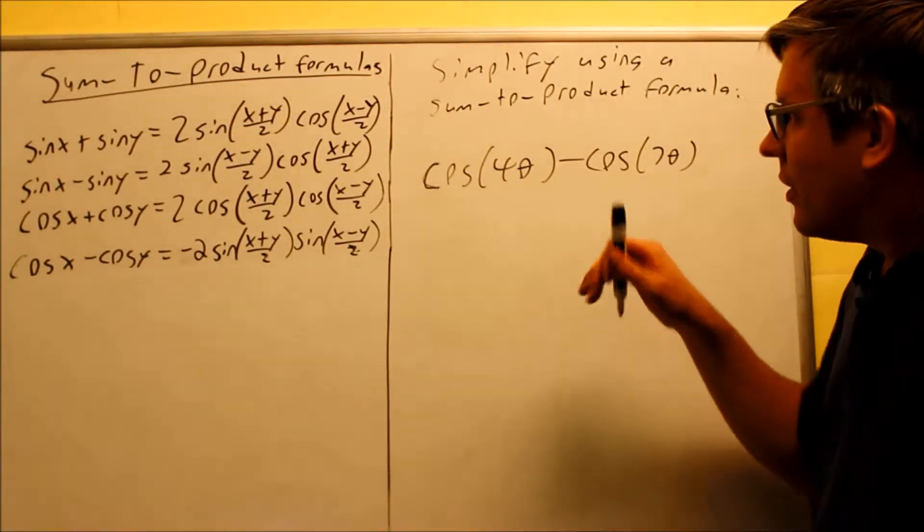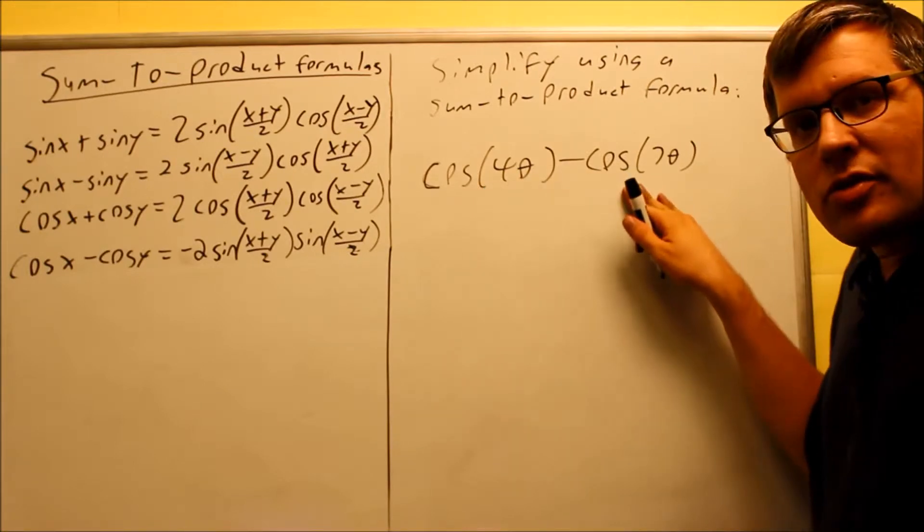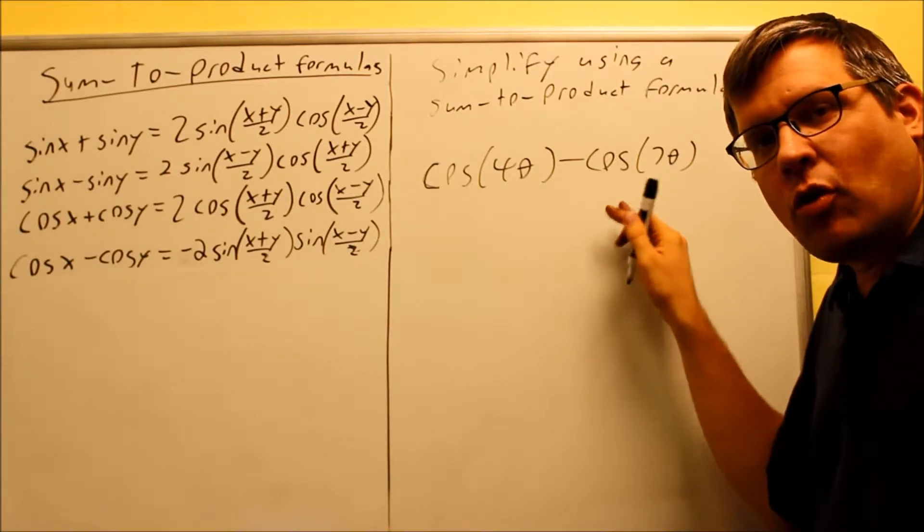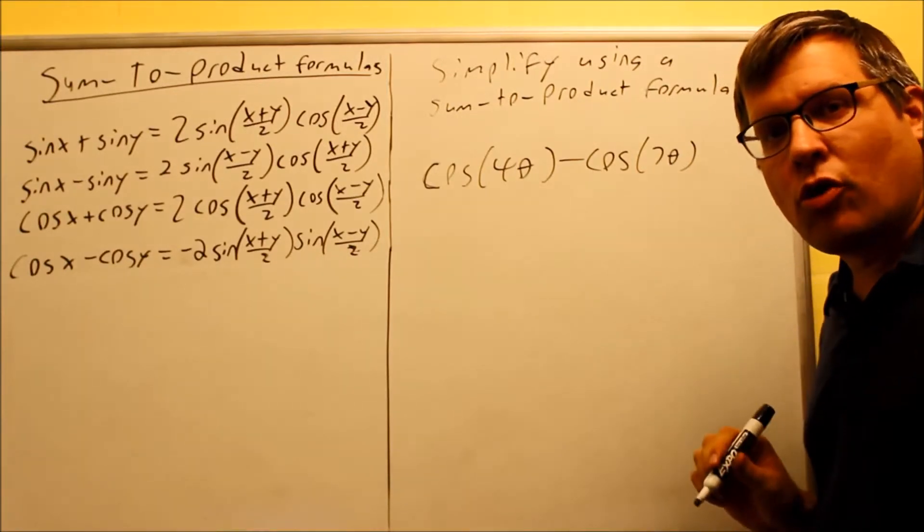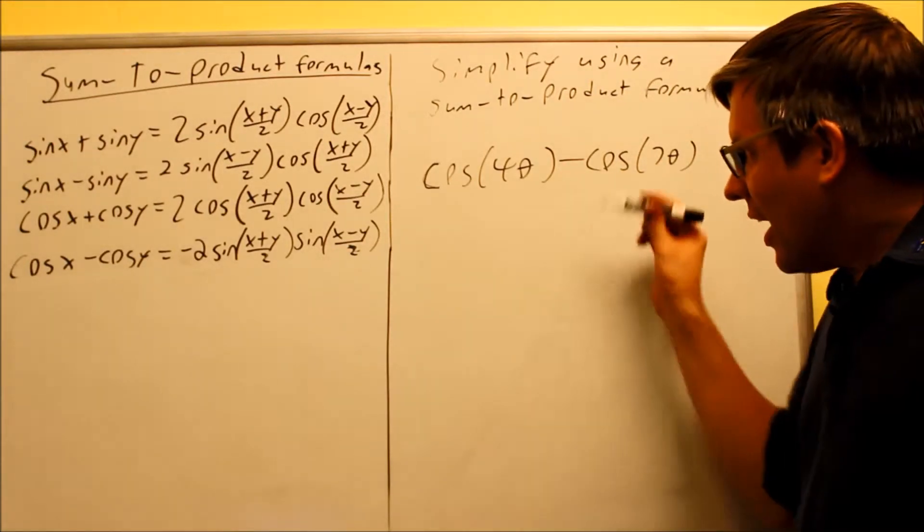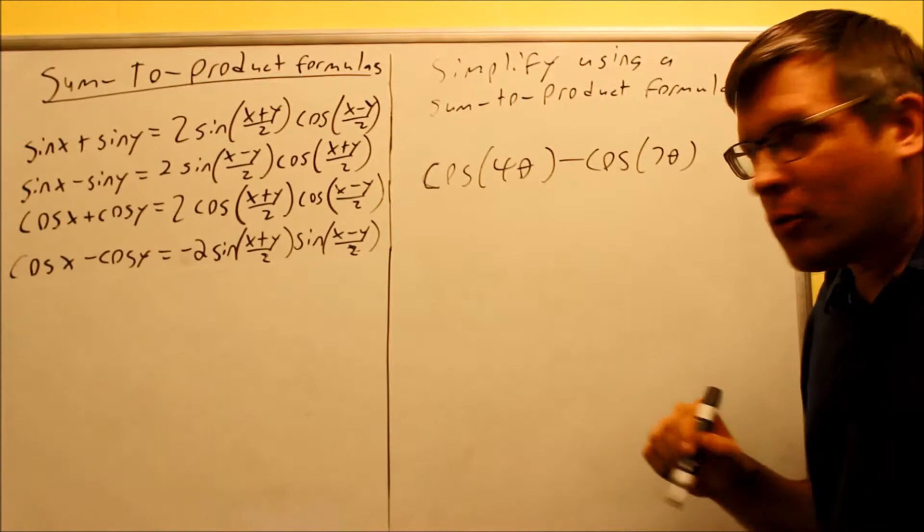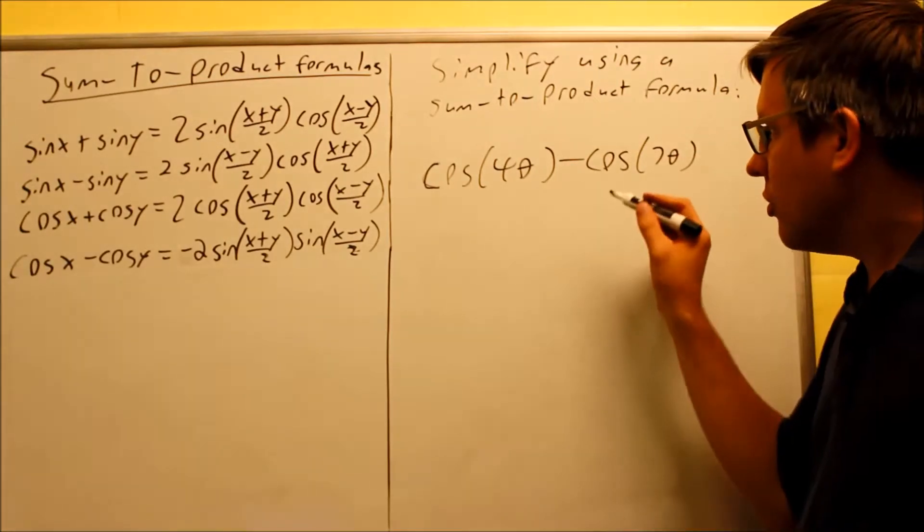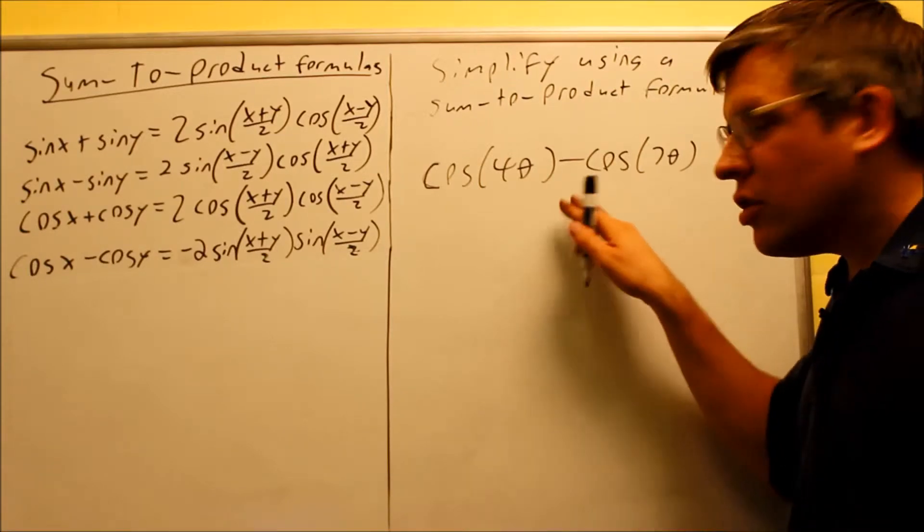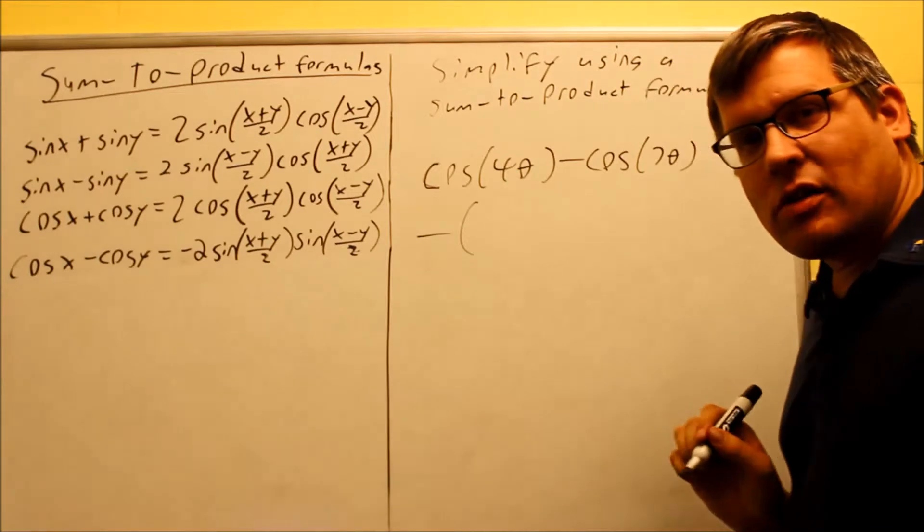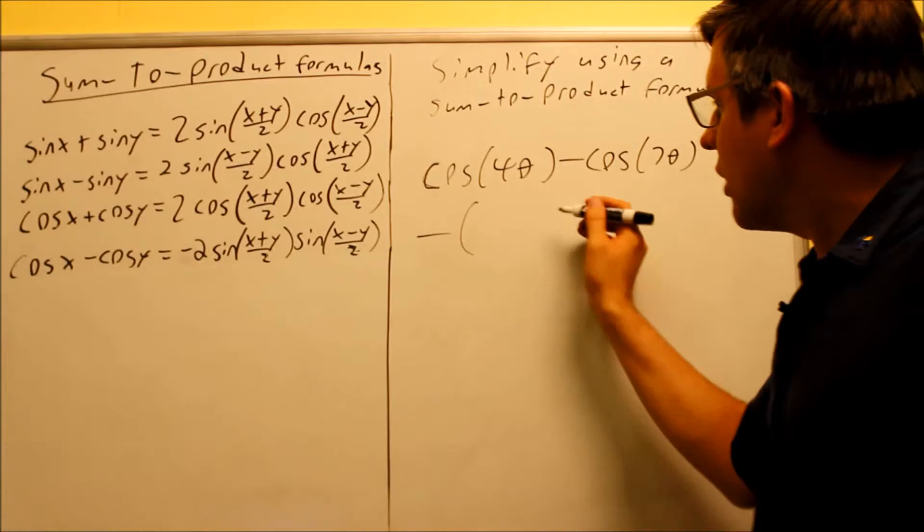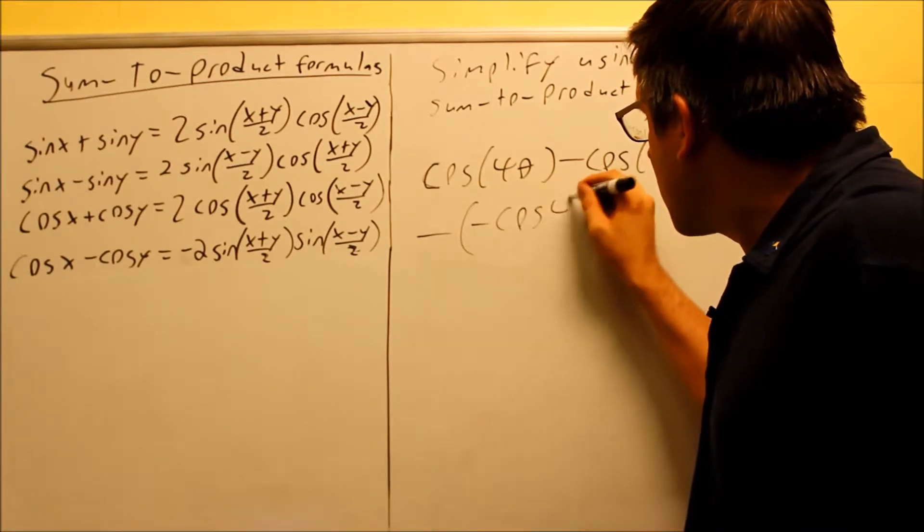Here's one more. Cosine 4 theta minus cosine 7 theta. Now in the last video I mentioned that you are allowed to change the order with addition but you're not allowed to simply change the order with subtraction. So in the notes I actually went ahead and did it as is and we ended up having to use an even odd property because we got 4 theta minus 7 theta. Now I want to show you there actually is a way that you can switch the order when you have subtraction. The way you do that is you actually factor out a negative sign. So I'm going to factor out a negative from this and show you a little bit different process from what was in the notes.